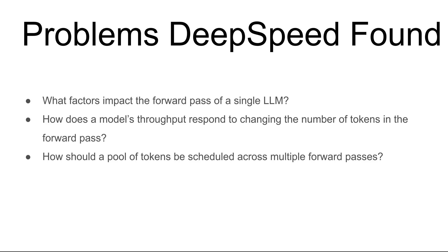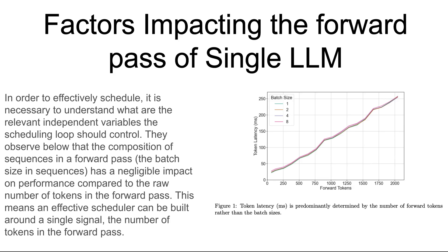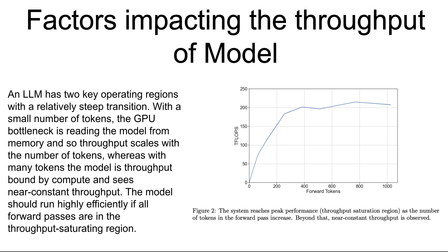I'll link the paper in the description so you can read about it in detail. The first key finding is about factors impacting the forward pass of a single language model. When running a large language model efficiently, you need to schedule how it processes data. The most important thing is the number of tokens the model processes at one time — whether you process many or few sequences doesn't matter as much. What really matters is the total number of tokens, so a good scheduler just needs to track the total tokens being processed in each pass.